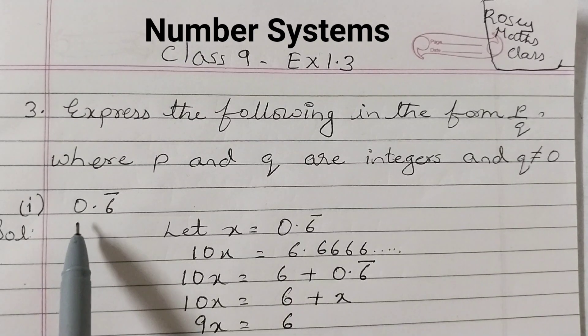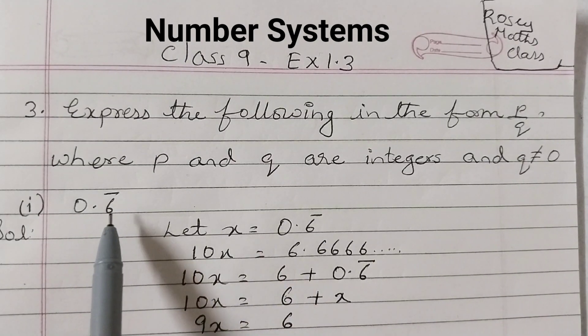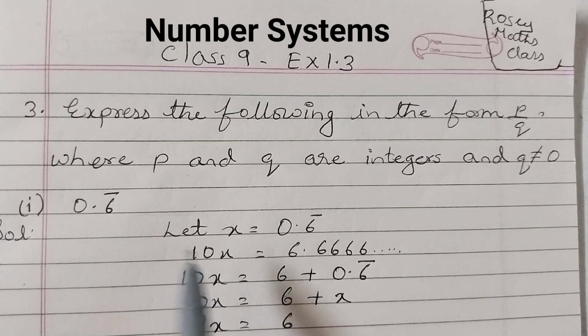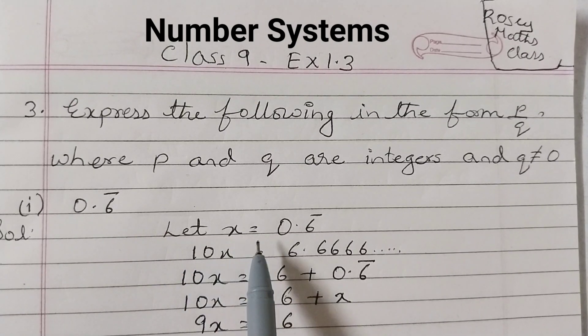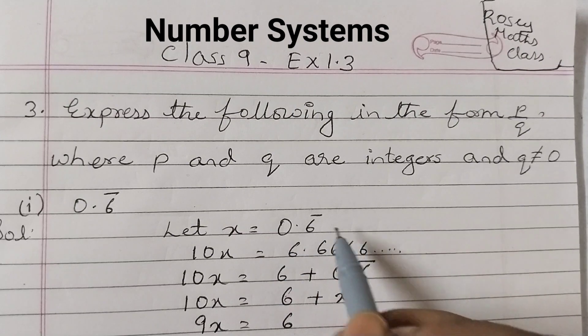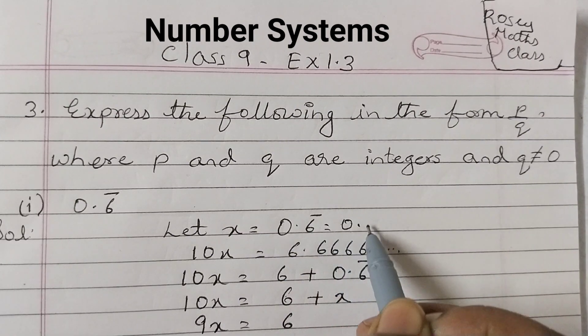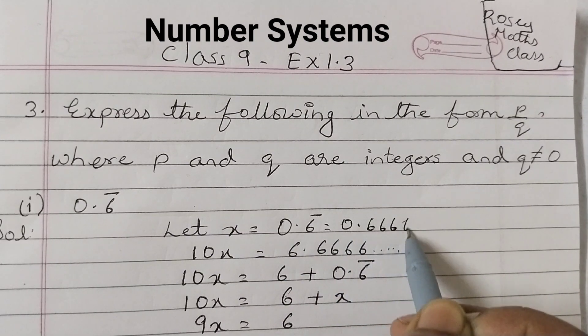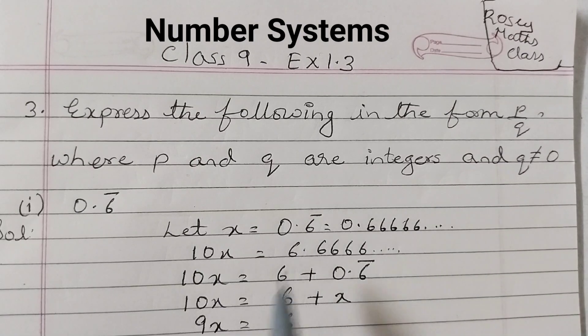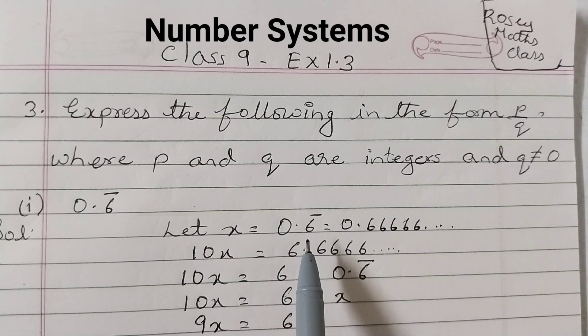The first one is 0.6̄. So bar means 6 is repeating itself. First step, let x equals 0.6̄, or you can write this as 0.6666... Since one digit is repeating, we will multiply by 10.